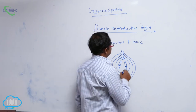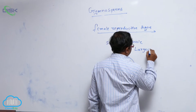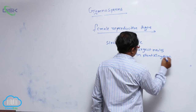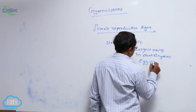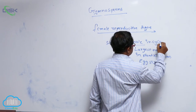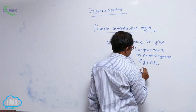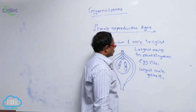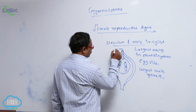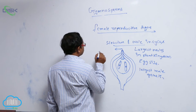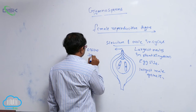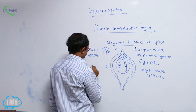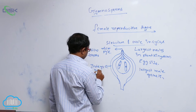Generally, in gymnosperms, the largest ovules in the plant kingdom are found. Generally they are egg-sized. For example, in Cycas, the largest ovules, largest female gametes, and largest male gametes are found. Ovules are orthotropous ovules, and the opening is known as the micropyle. After the micropyle, there is the integument.